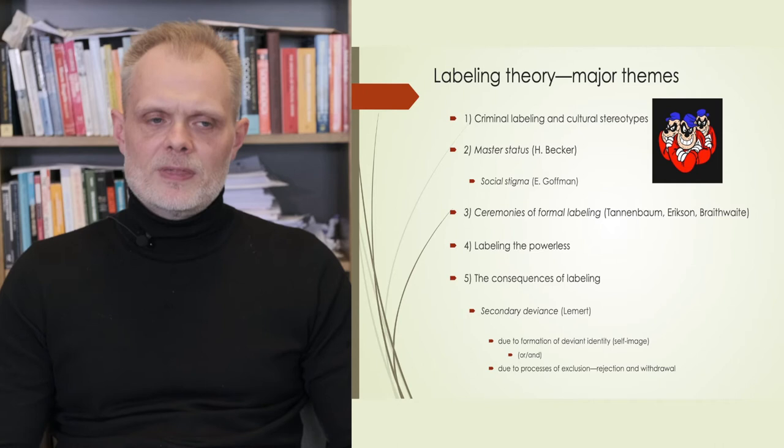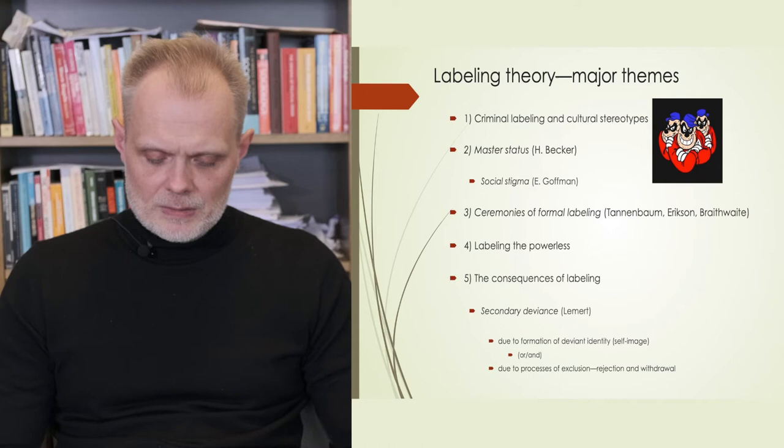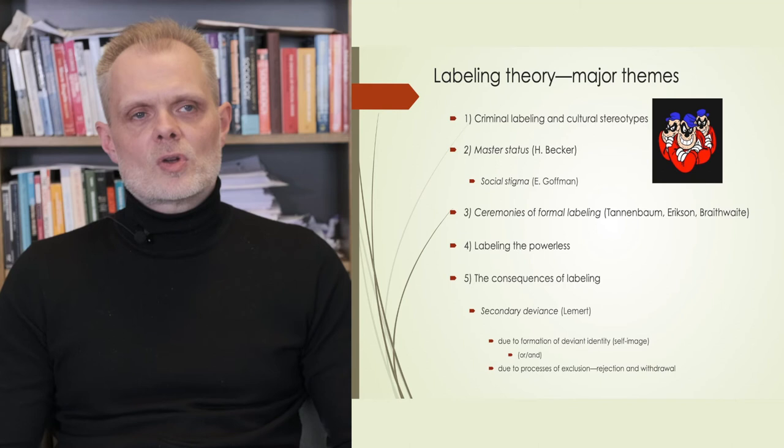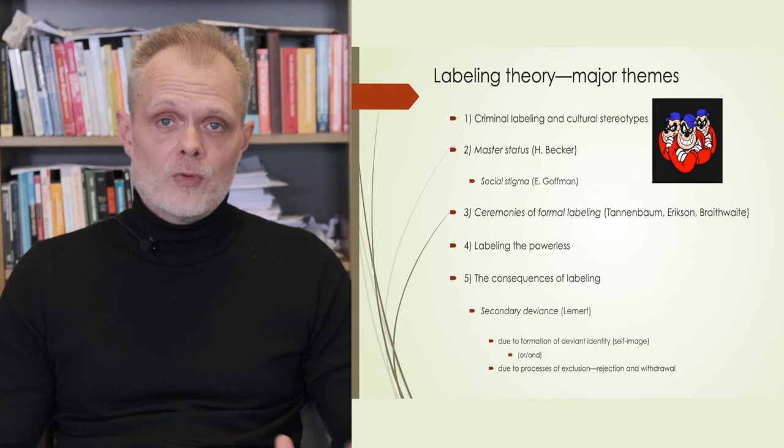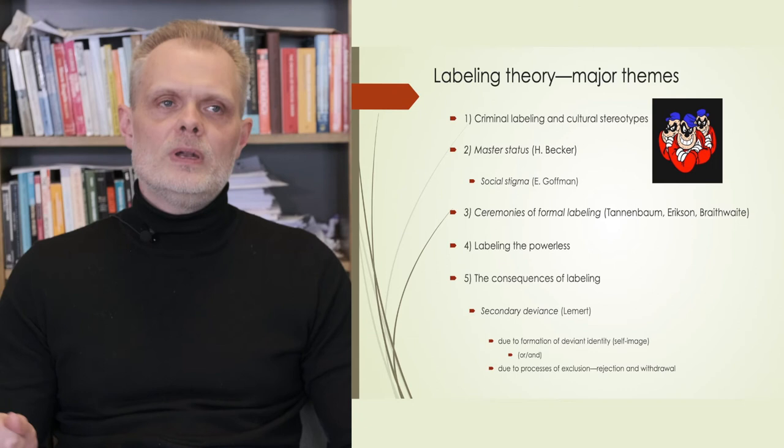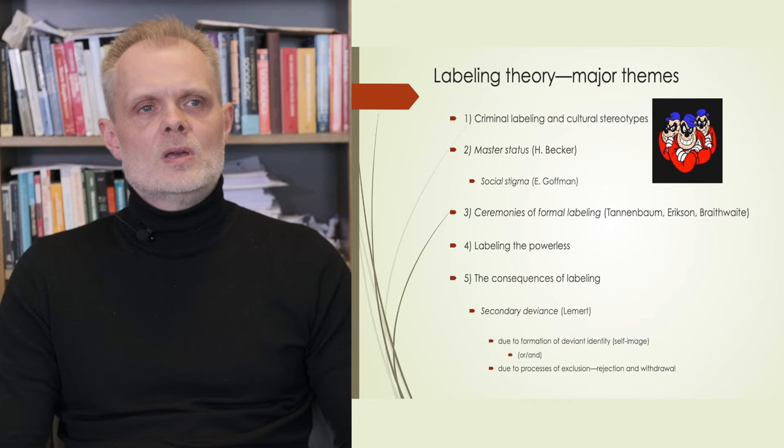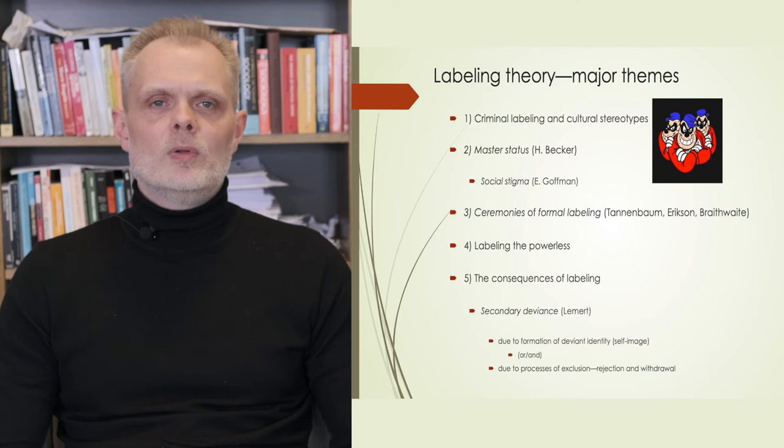Fifth, the final theme is that the theory argues there are several social consequences for the labeled individual. All of these social consequences imply that criminal labeling, especially formal criminal justice labeling, may lead to deeper involvement in criminal behavior. This is what Edwin Lemert refers to as secondary deviance, the kind of deviant behavior that people do because of all the problems caused by labeling.